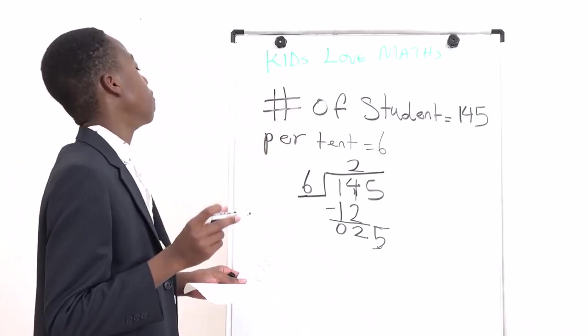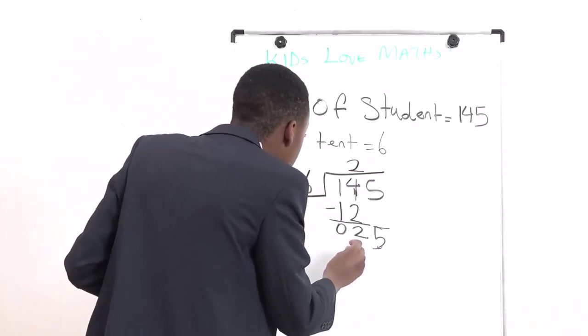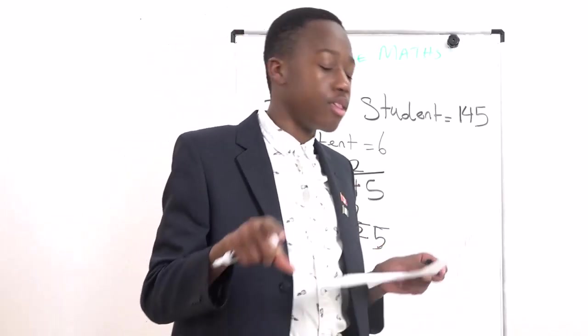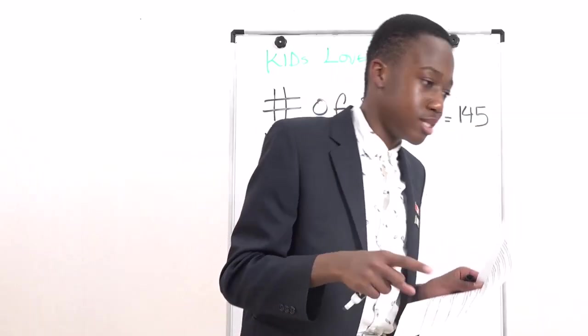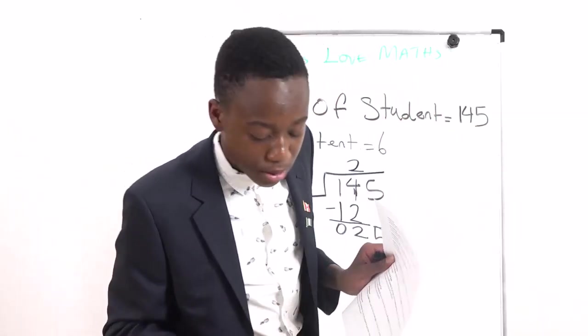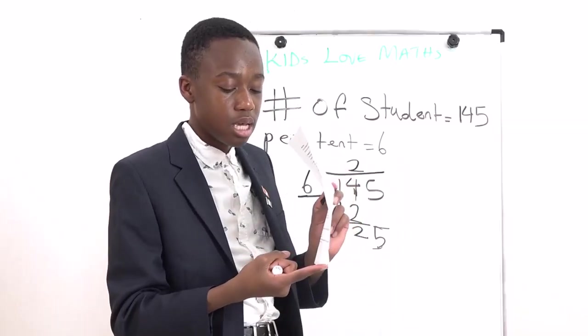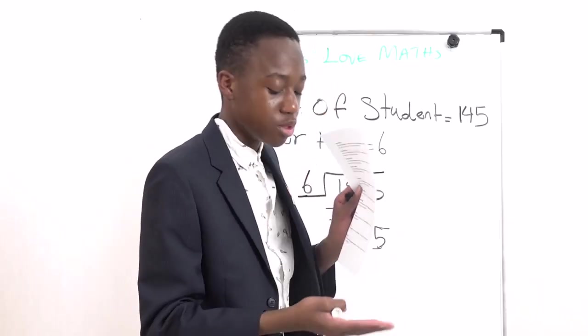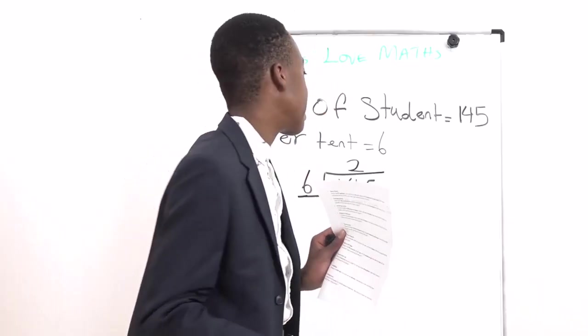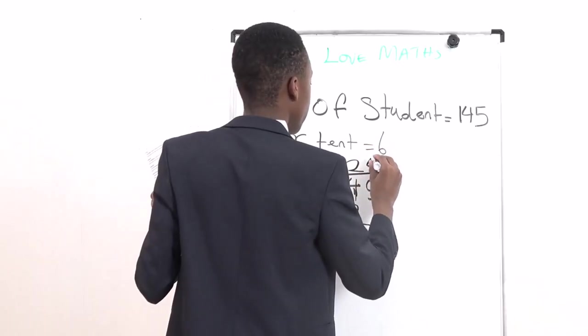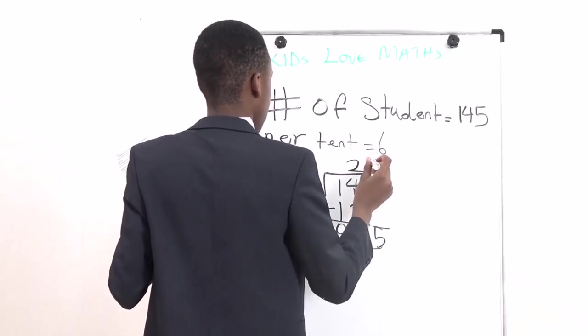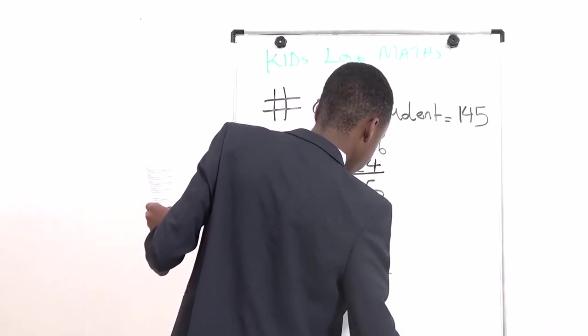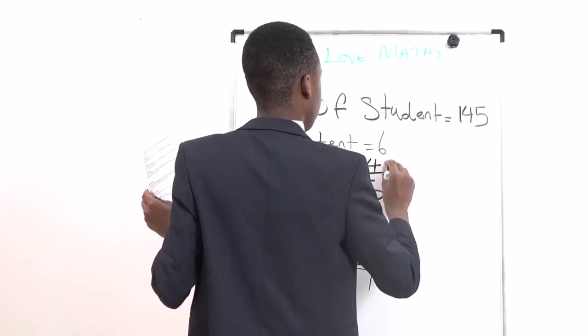Now that gives us 25. But we still need to divide 25 by 6. If we have 25 and we need to divide by 6, we can skip count. 6 plus 6 equals 12, plus 6 equals 18, plus 6 equals 24. That's the closest we can get. So we put 4 over here, and do 4 times 6 equals 24. That gives us 0 and we have 5. It's remainder 1.